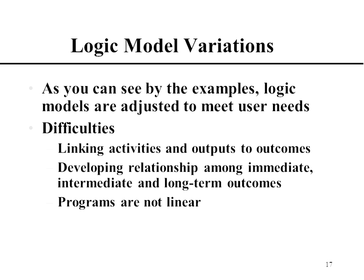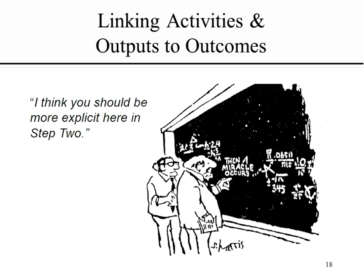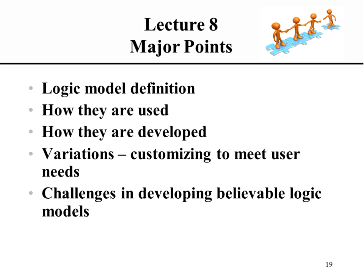Another difficulty, as you saw in the science example, is that some programs don't see themselves as linear. Linking activities and outputs to outcomes is difficult. There's a cartoon illustrating this: in the middle it says 'and then a miracle occurs,' and one guy is telling the other that 'a miracle occurs' isn't good enough — you have to be more specific.